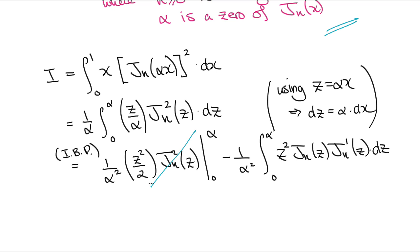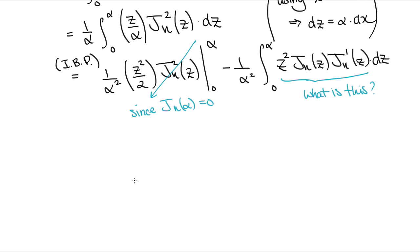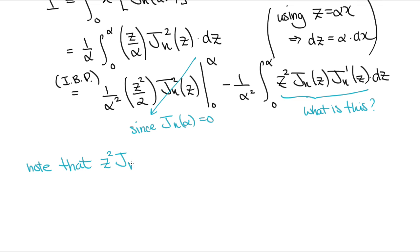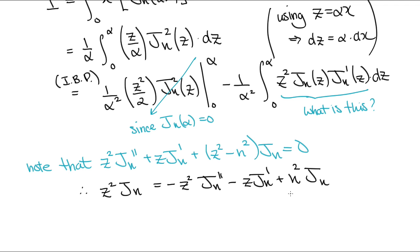The first term is 0 because at the upper limit z equals alpha, the Bessel function is 0, while at the lower limit z equals 0. But then the question is, what do we do with the second term? For this term, we have to return back to the original differential equation. We put x equals z and y equals jn into the differential equation, and isolate the z squared jn term. This is now used in the integrand to give the following result.